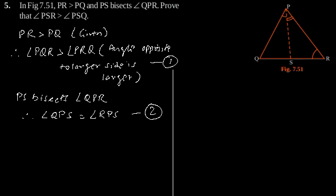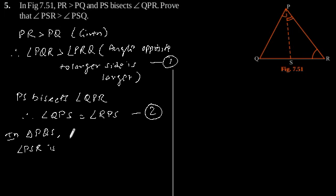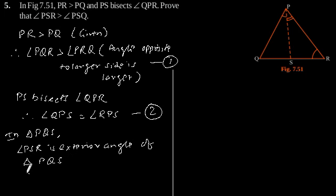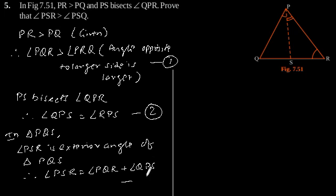Now considering triangle PQS: angle PSR is the exterior angle of triangle PQS. Therefore, angle PSR is equal to angle PQR plus angle QPS. Let's call this equation three.